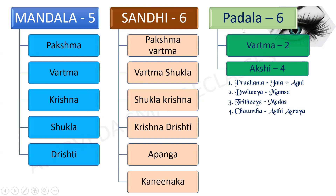There are 6 Padalas: 2 in Vartma and 4 in Akshi. The Prathama Padala is made up of Jala-Agni Ashraya, the Dvitiya is Mamsa Ashraya, Tritiya is Medhu Ashraya, and the Chaturtha is Asthi Ashraya.